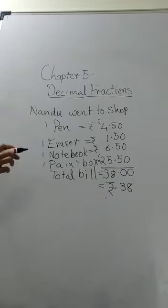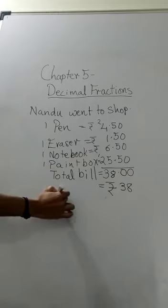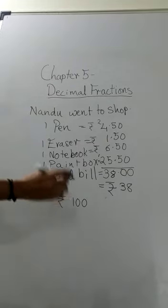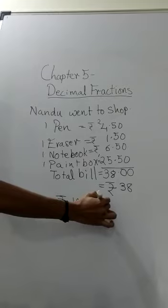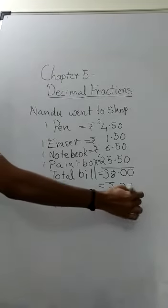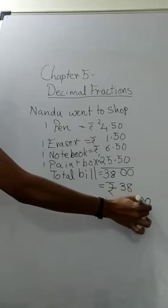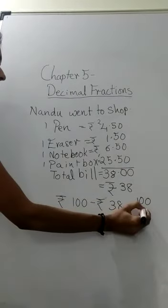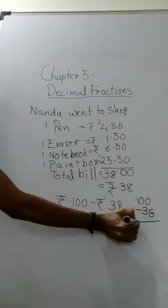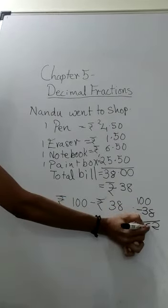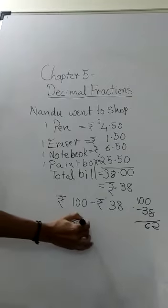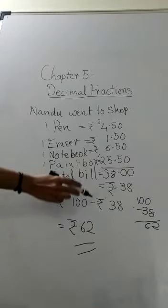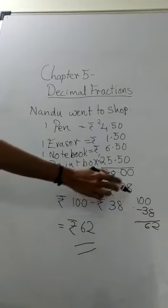The total amount he will have to pay is 38 rupees. He is having 100 rupees with him. So how much money will he get back? That is the question. So 100 minus 38 — 100 minus 38 gives you 62. So the answer is 62 rupees. He will pay 100 rupees, the total bill is 38, and he will get back 62 rupees.